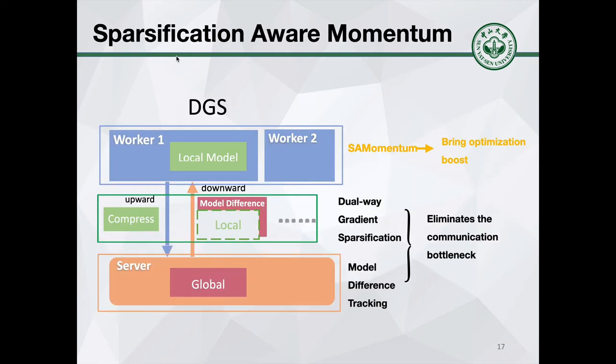We discussed the algorithm and implementation of dual-way sparsification, which eliminates the communication bottleneck of async training. Next, we will introduce sparse-aware momentum, which is a novel momentum suitable for async training and sparse scenarios. Compared with existing momentum, which can only be used under dense updates, our sparse-aware momentum can achieve much better convergence performance in the sparse scenario.